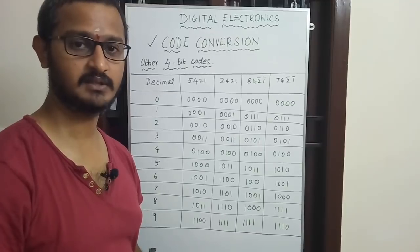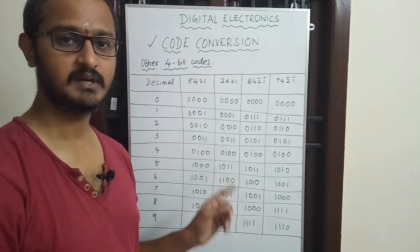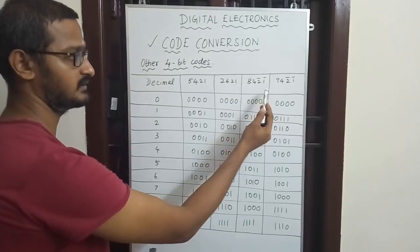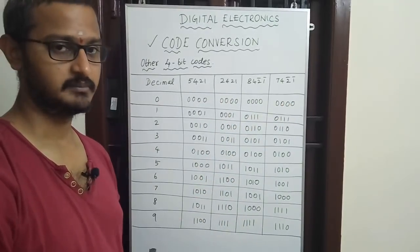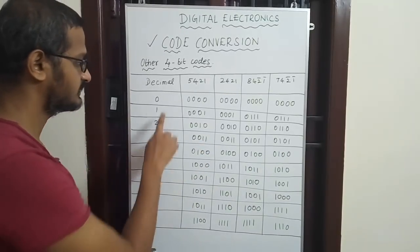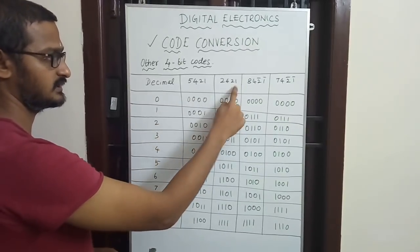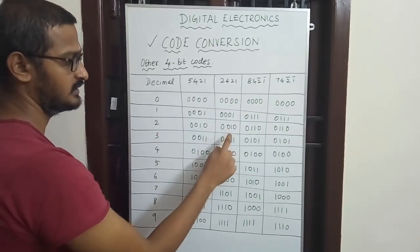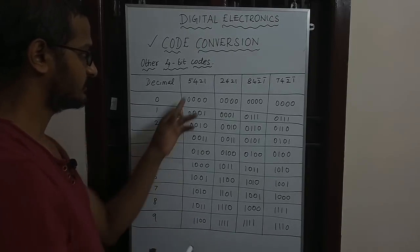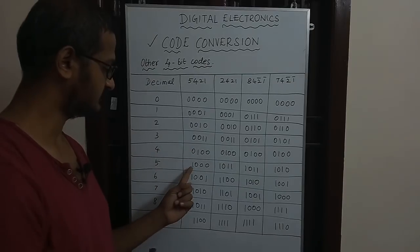Next, we look at other weighted codes. For decimal 0 to 9, we have: 5421 code, 2421 code, 8421 code (standard BCD), 842 2-bar 1-bar code, and 7421 code. The bar notation means negative weighting — that is, minus. For example, in the 842 2-bar 1-bar code, the negative weights subtract their value.